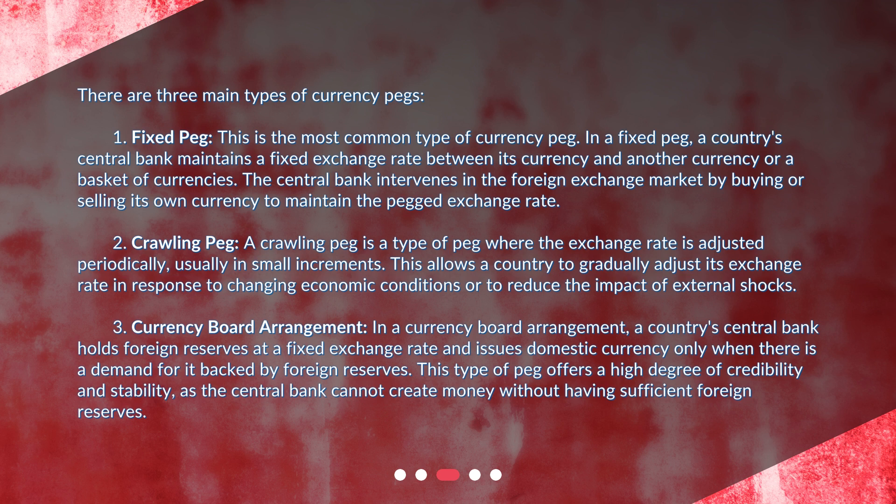Second, the crawling peg. A crawling peg is a type of peg where the exchange rate is adjusted periodically, usually in small increments. This allows a country to gradually adjust its exchange rate in response to changing economic conditions or to reduce the impact of external shocks.